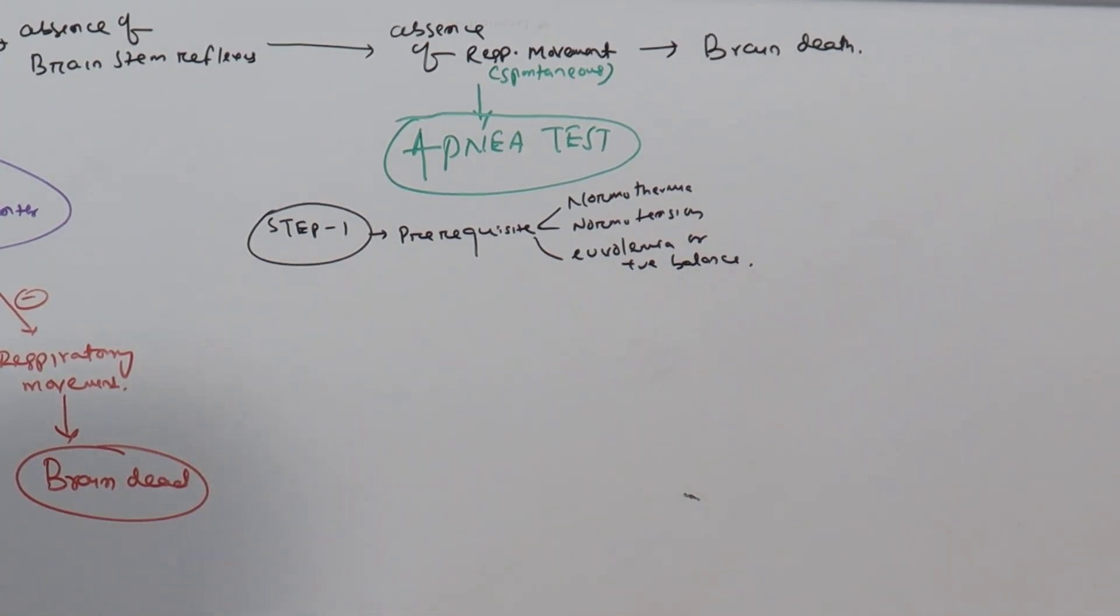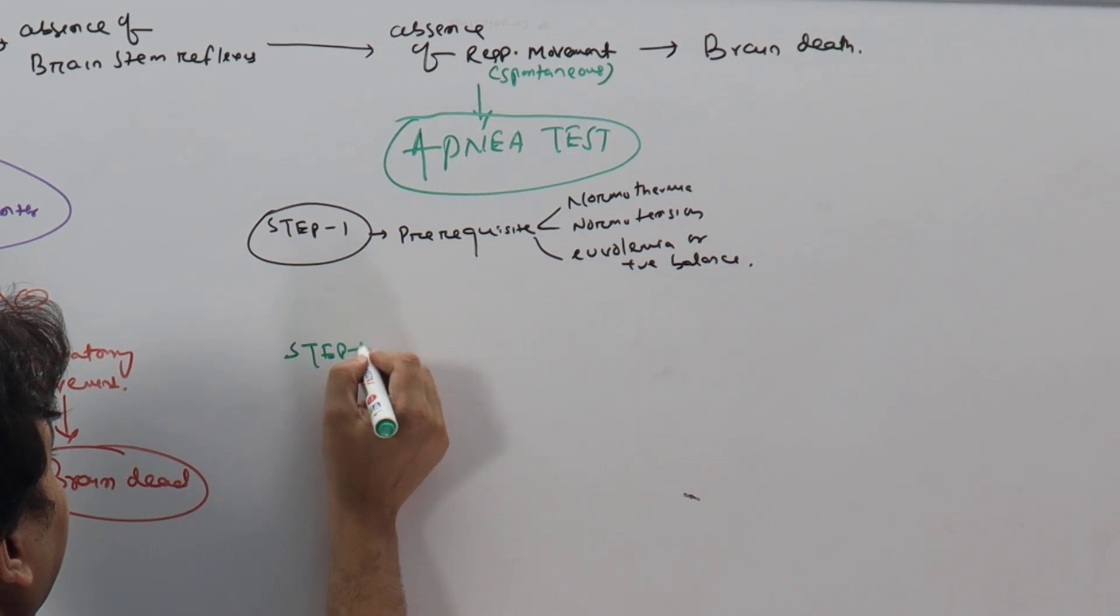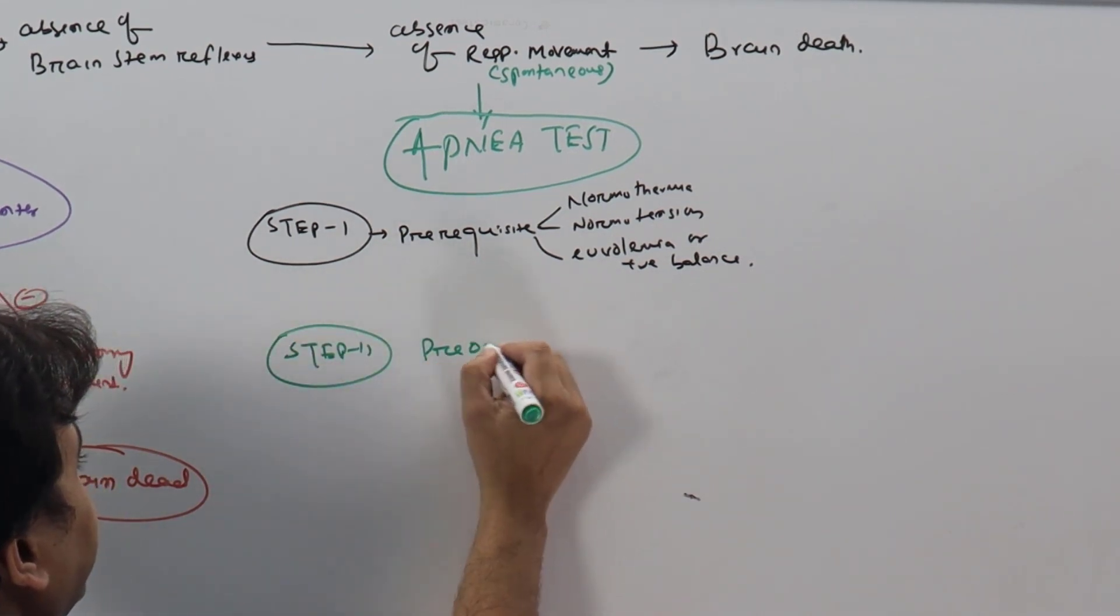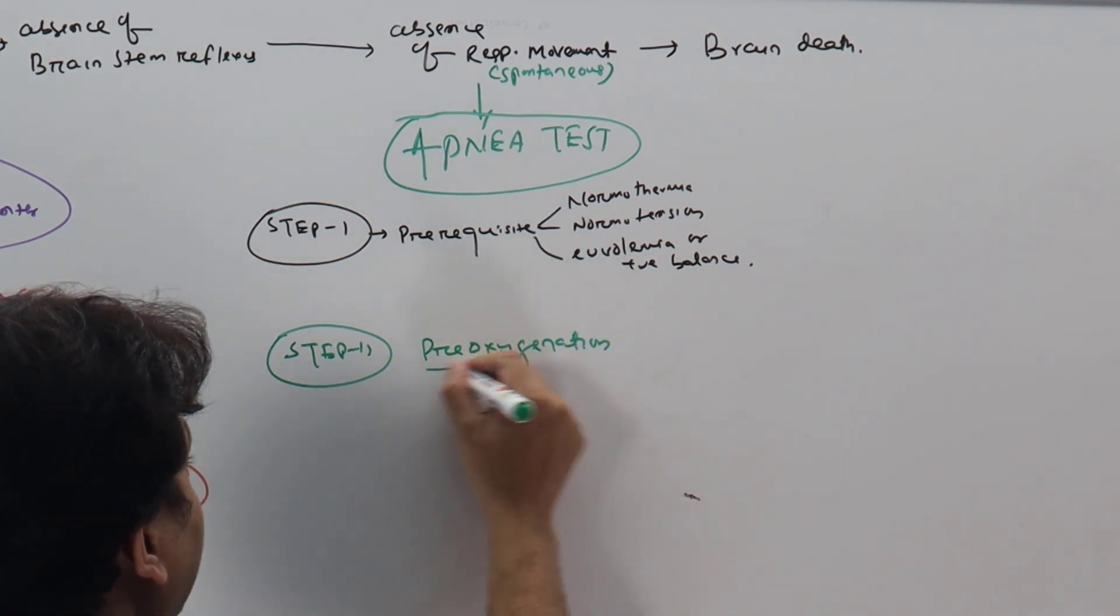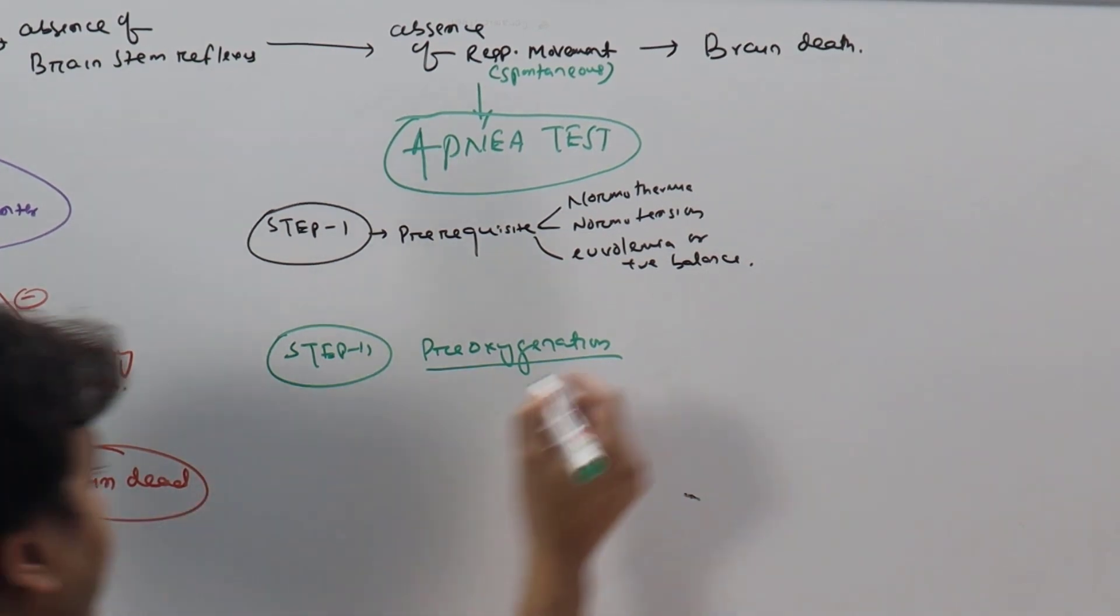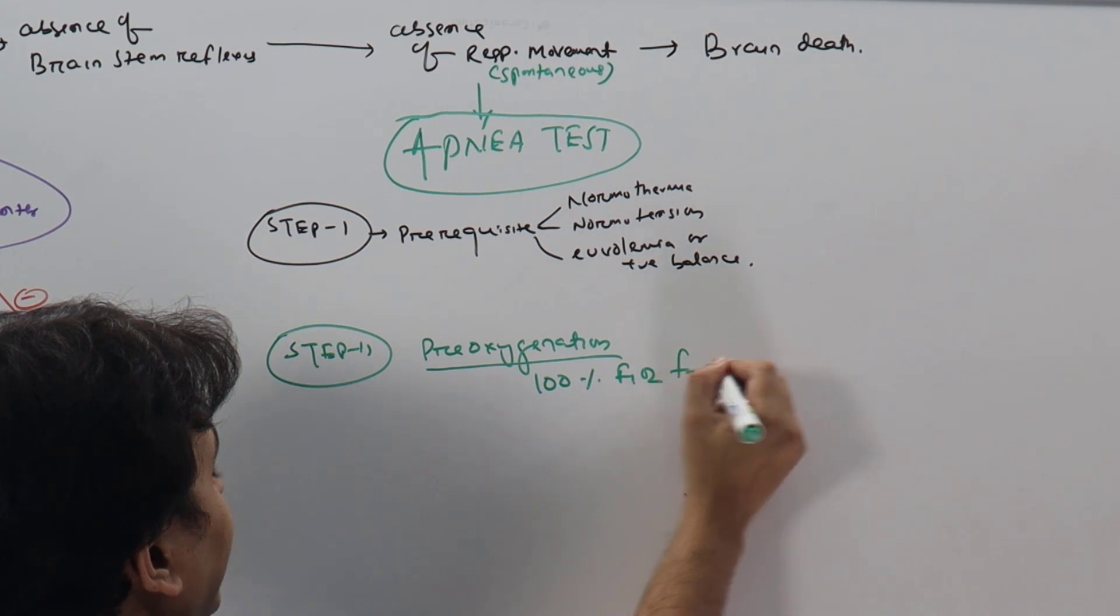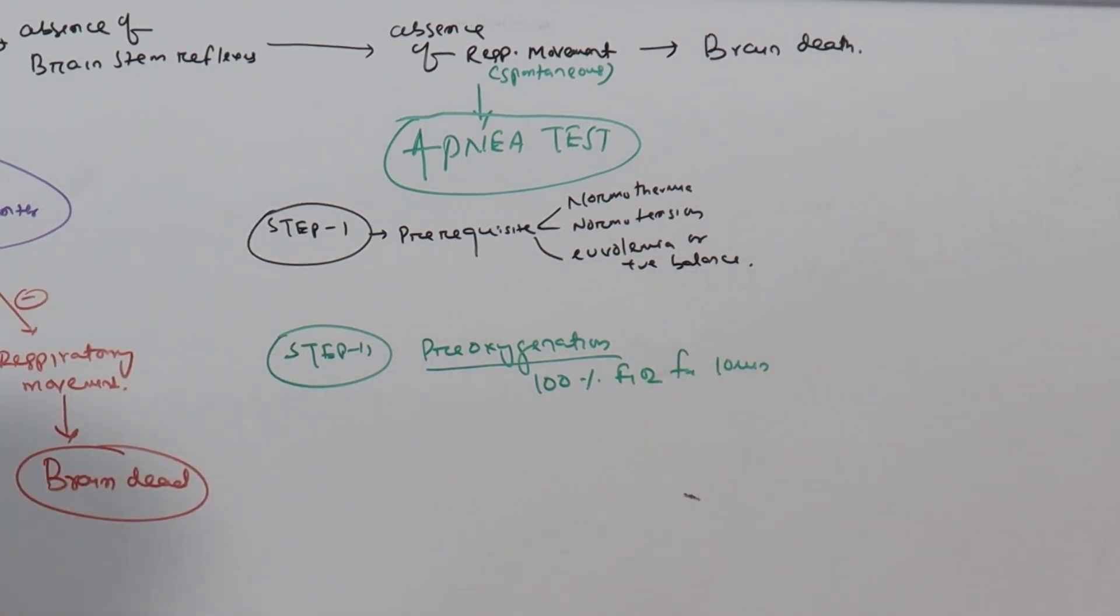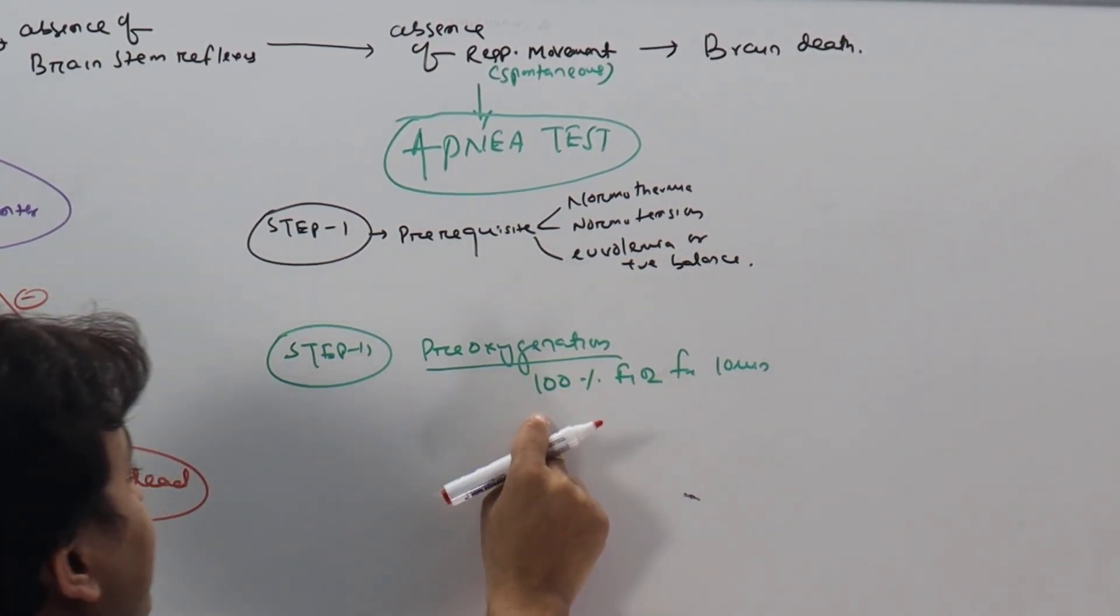Once these prerequisites are fulfilled, the next step will be pre-oxygenation. How to do pre-oxygenation? In this case, we have to give 100% FIO2 for 10 minutes. This is to prevent hypoxemia during apnea test because you have to wash out all the nitrogen.